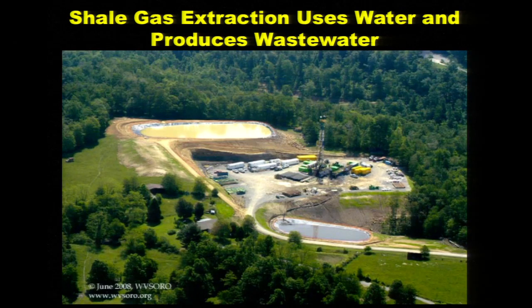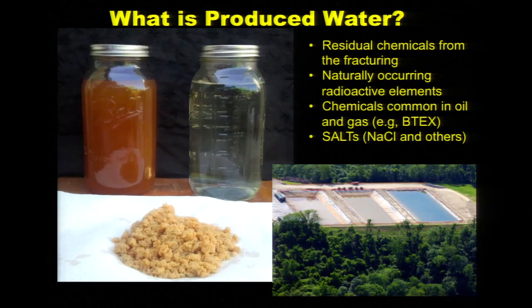Shale gas extraction is particularly known to use a lot of water and to generate a significant amount of produced water. A typical shale gas operation — this one in West Virginia — will start with one to five million gallons of water. After the hydraulic fracture operation, 10 to 15% of that water will come back to the surface in the first couple of weeks, and then water continually is produced out of these formations along with the gas. That produced water contains residuals from everything put into the hydraulic fracturing, as well as naturally occurring radioactive materials, a lot of salt, and chemicals typically found with hydrocarbons: benzene, toluene, and ethylbenzene.